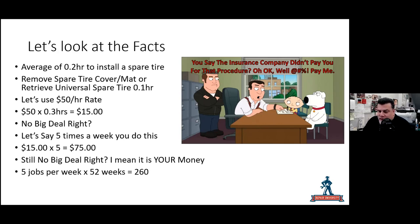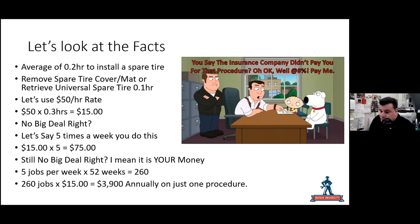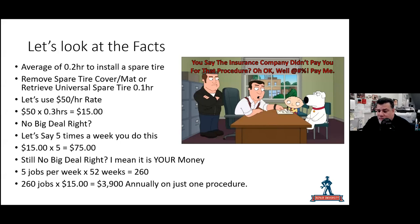Five jobs per week times 52 weeks equals 260 jobs a year. At $15 each, that's $3,900 annually — and that's just one procedure. By the end of this program series, we're going to look at how much money is being left on the table across these procedures that you could collect on if you choose to.